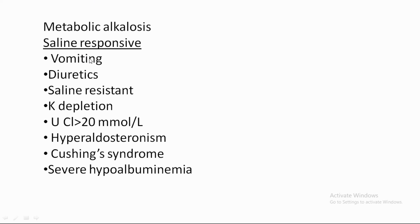The Saline Responsive type includes causes such as vomiting, nasogastric suction, and diuretic abuse including thiazide and loop diuretics. The Saline Resistant type has a urinary chloride mainly greater than 20 mmol per litre, and involves potassium depletion. Causes include hyperaldosteronism, Cushing's syndrome, and hypoalbuminemia.